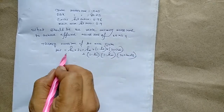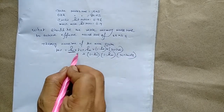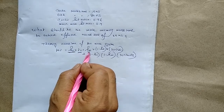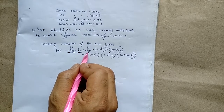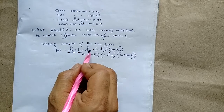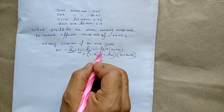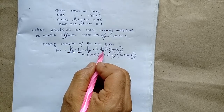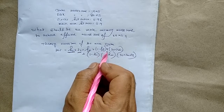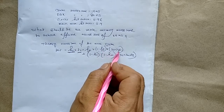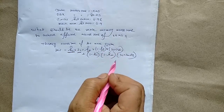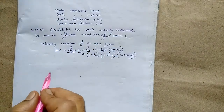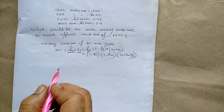Here, hc means hit ratio of the cache, tc means time to access from cache memory, hm means main memory hit ratio, (1 − hc) means miss ratio, tm means time to access from main memory, and ts means time to access from disk storage.